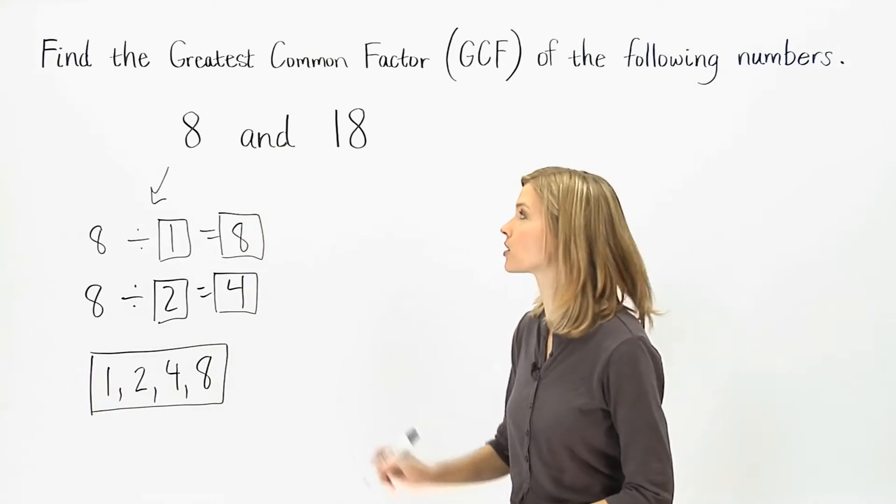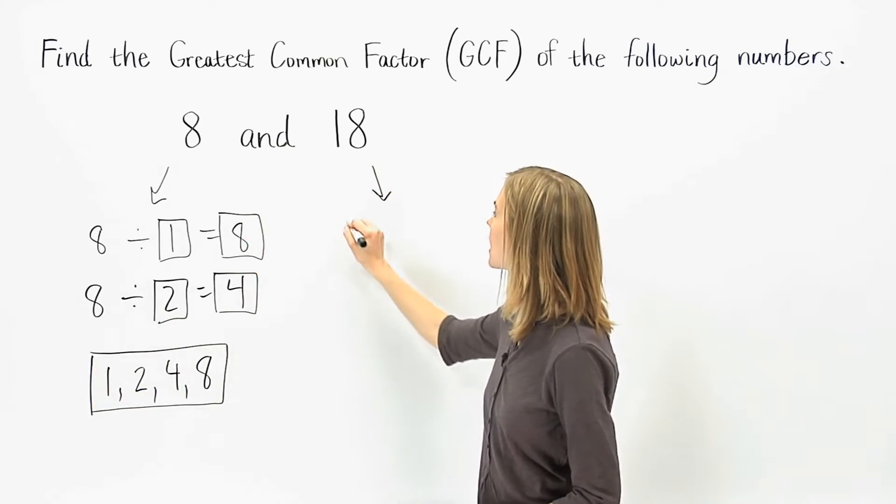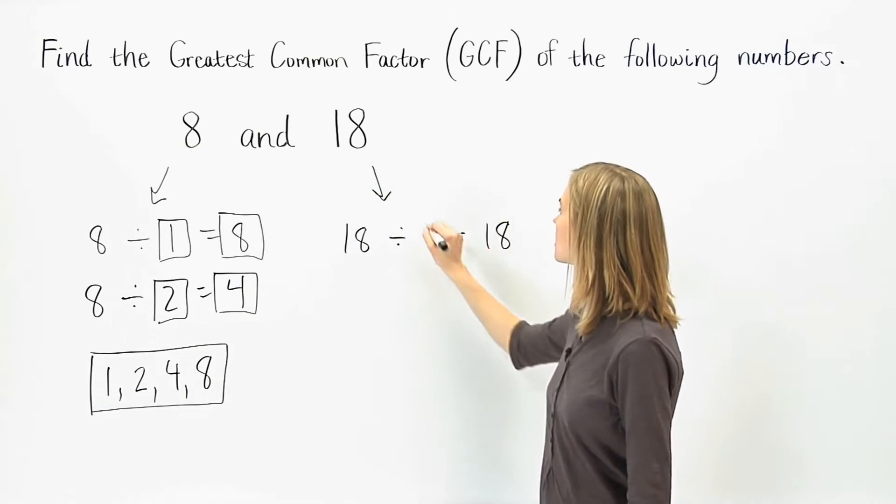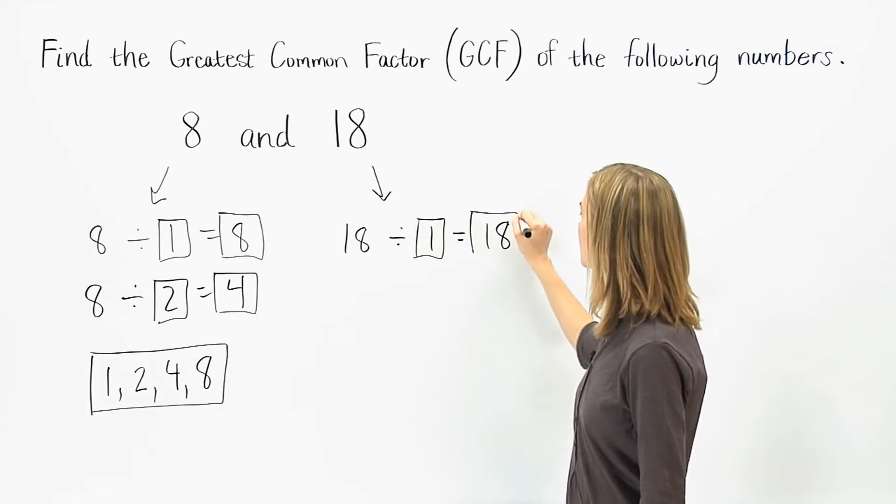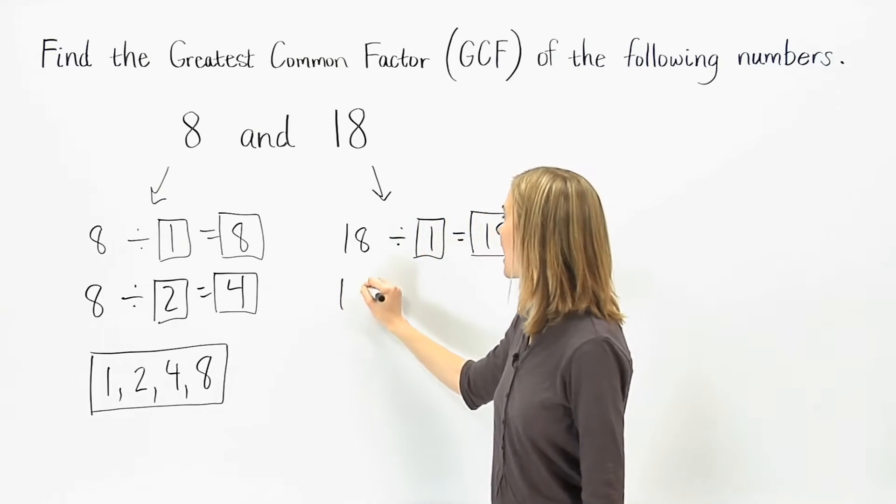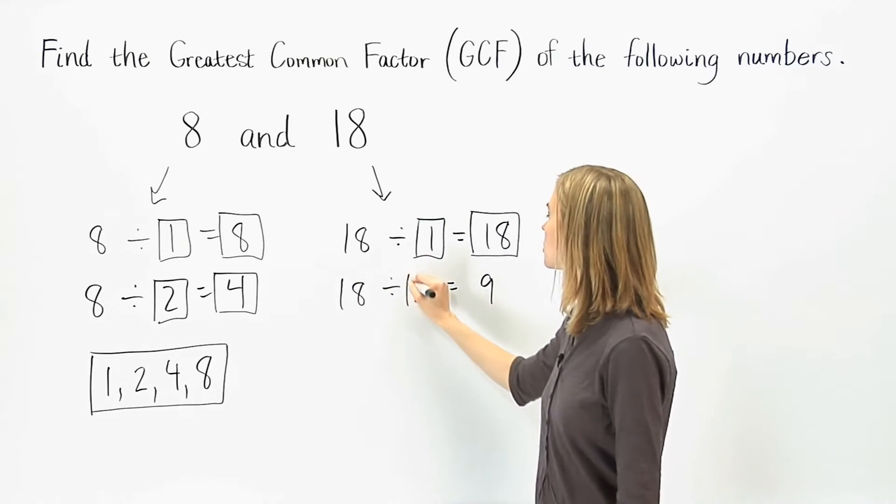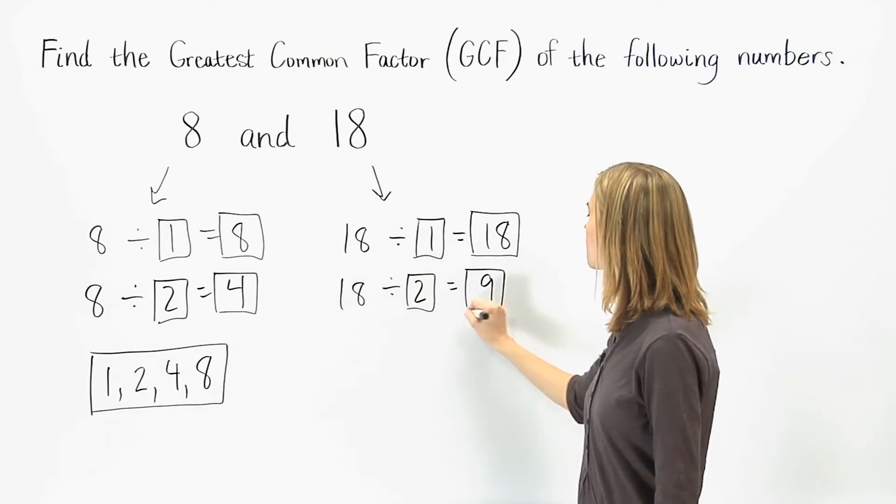Now let's find the factors of 18. 18 divided by 1 is 18, so 1 and 18 are factors. 18 divided by 2 is 9, so 2 and 9 are factors.